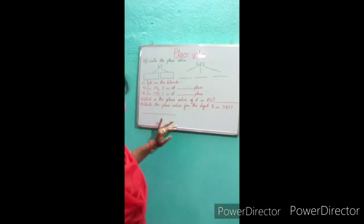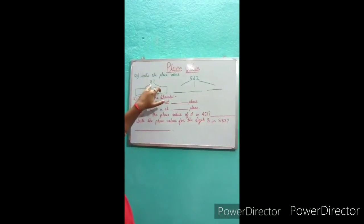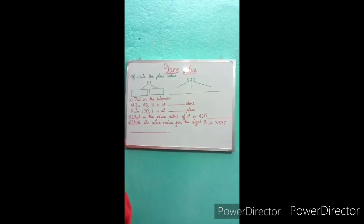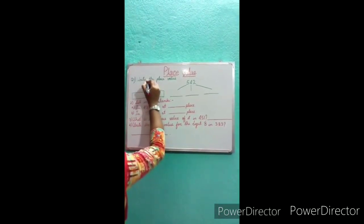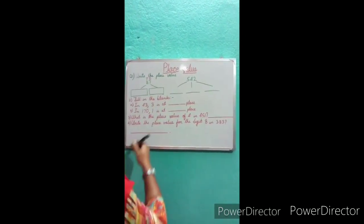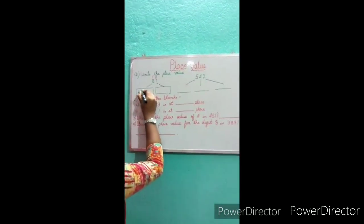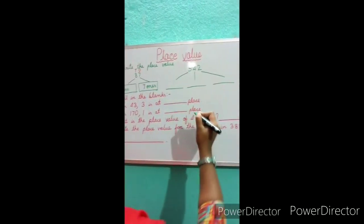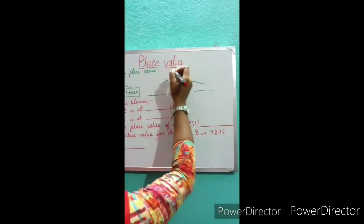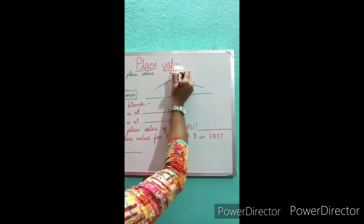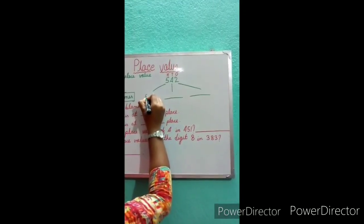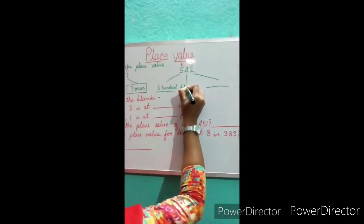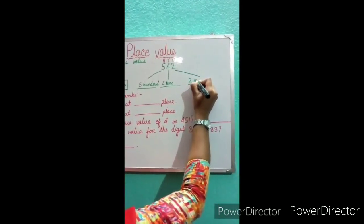Now here are some questions. Write the place value. First one is 87 — we write the places tens and ones, so 8 is at the tens place and 7 is at the ones place. Second one is 542 — we write hundreds, tens, ones. So 5 is 500, 4 is 40 (tens place), and 2 is ones place.